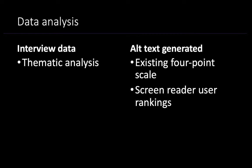The interview data that we collected was coded by two authors using thematic analysis. The alt text generated by our participants was ranked with an existing four-point scale created by Gleason et al., from 1 — irrelevant or inaccurate — to 4 — almost everything described, including information that might not be immediately apparent visually. We also asked our participants who used screen readers from our second study to rank these alt texts, to get feedback from real end users.